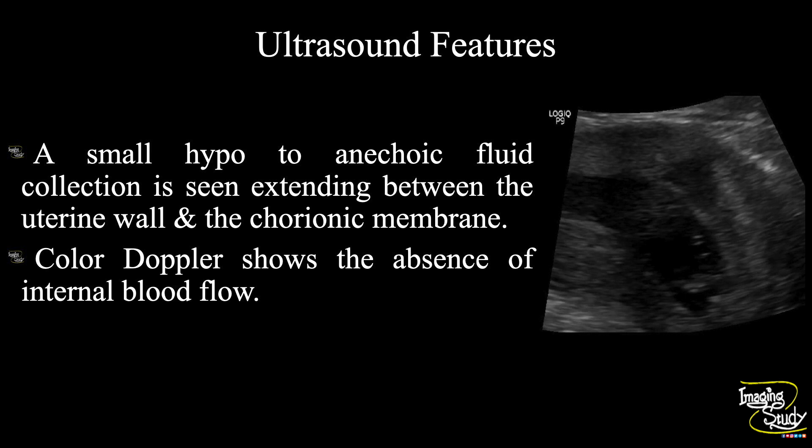In summary, a small hypo-to-anechoic fluid collection is seen extending between the uterine wall and the chorionic membrane. Color Doppler shows absence of internal blood flow. These features suggest a case of subchorionic hematoma.